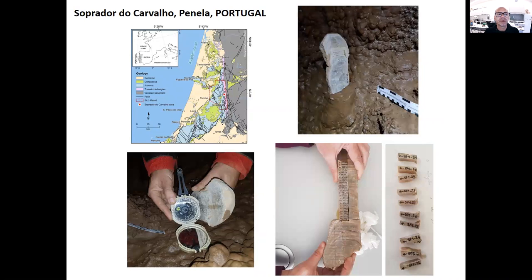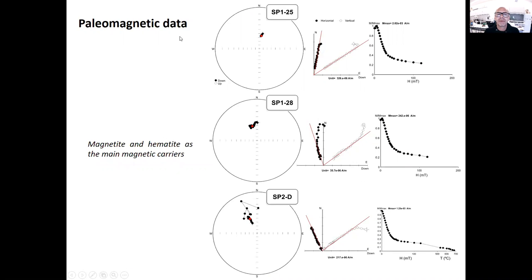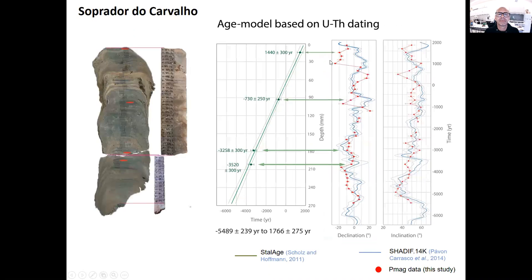To test this idea, we studied speleothems from Soprador do Carvalho in Portugal. Alternating field and thermal demagnetization show stable and reliable magnetic directions carried by magnetite and hematite. We also dated our speleothem using U-Th dating and provided an age model using the Stalage algorithm. We then compared our magnetic data to a PSV model — in this case the Shadith model.